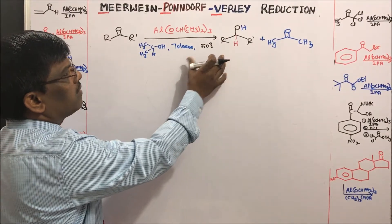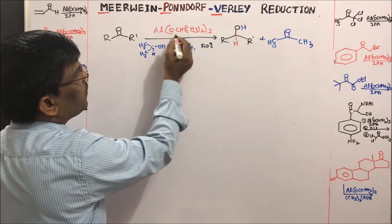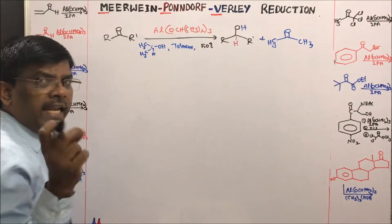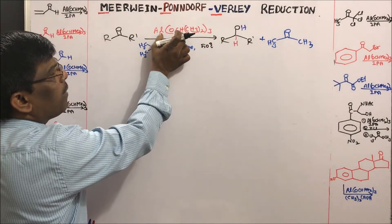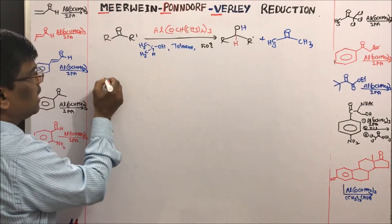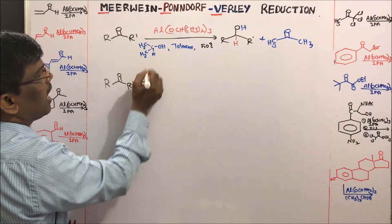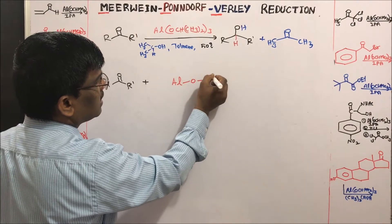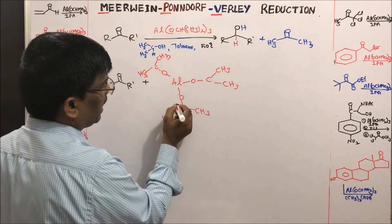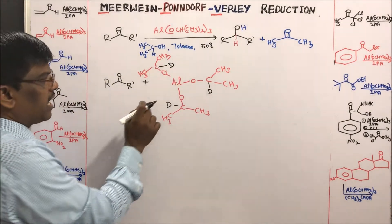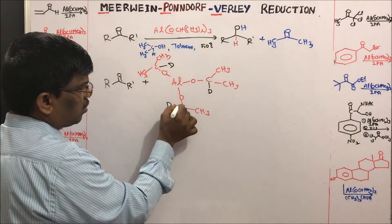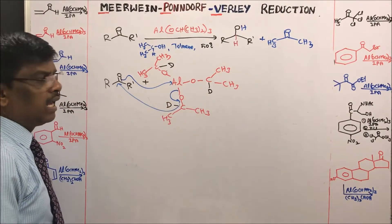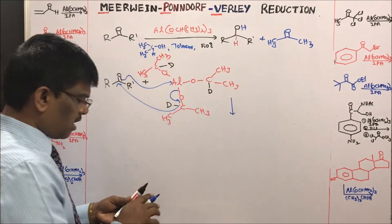During the mechanism, one hydrogen migrates from aluminum isopropoxide and another comes from isopropyl alcohol. This is proved using isotopically labeled aluminum isopropoxide. When deuterated aluminum isopropoxide is used with an aldehyde or ketone, in the first stage the deuteride migrates onto the carbonyl compound forming the mixed alkoxide with D transferred.